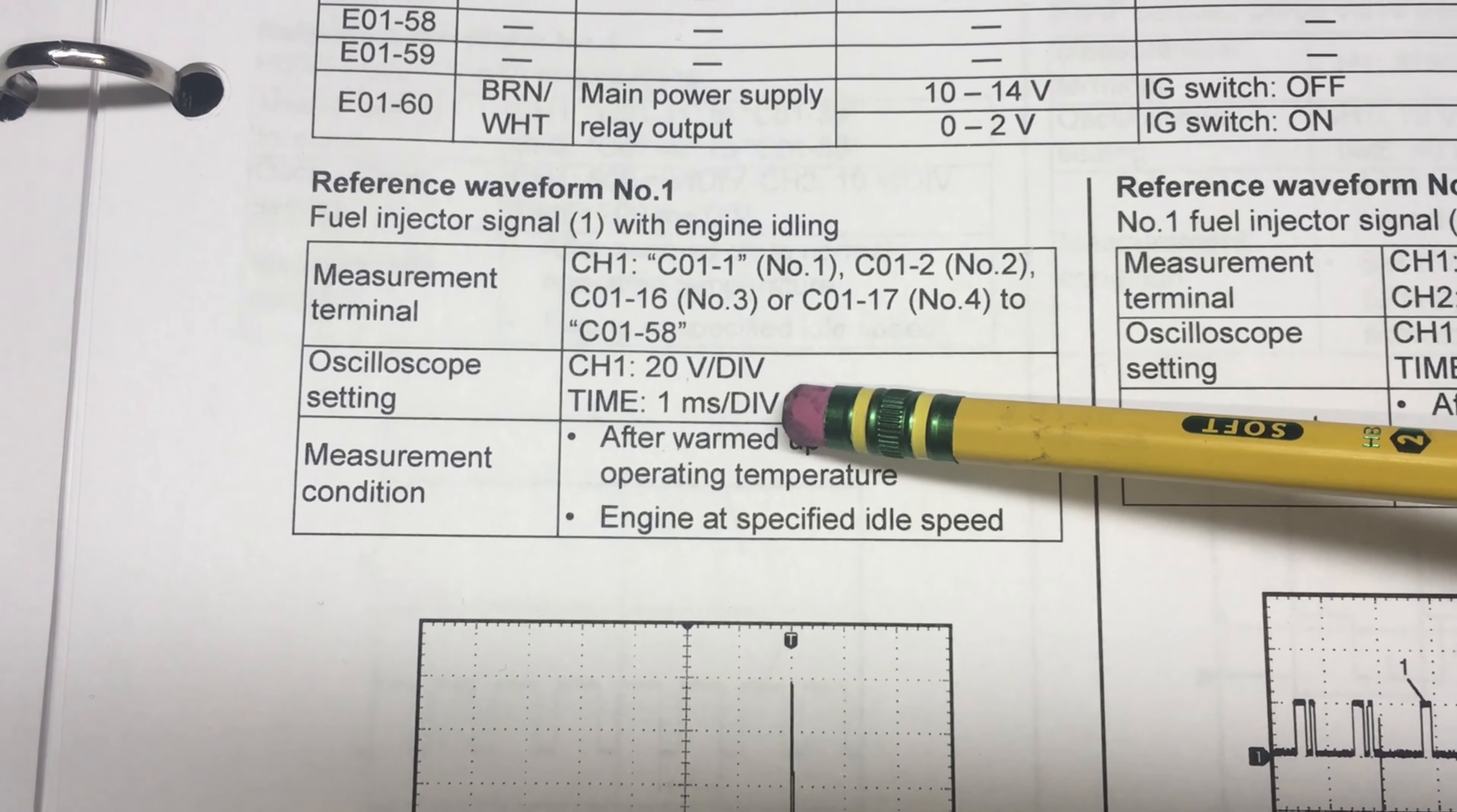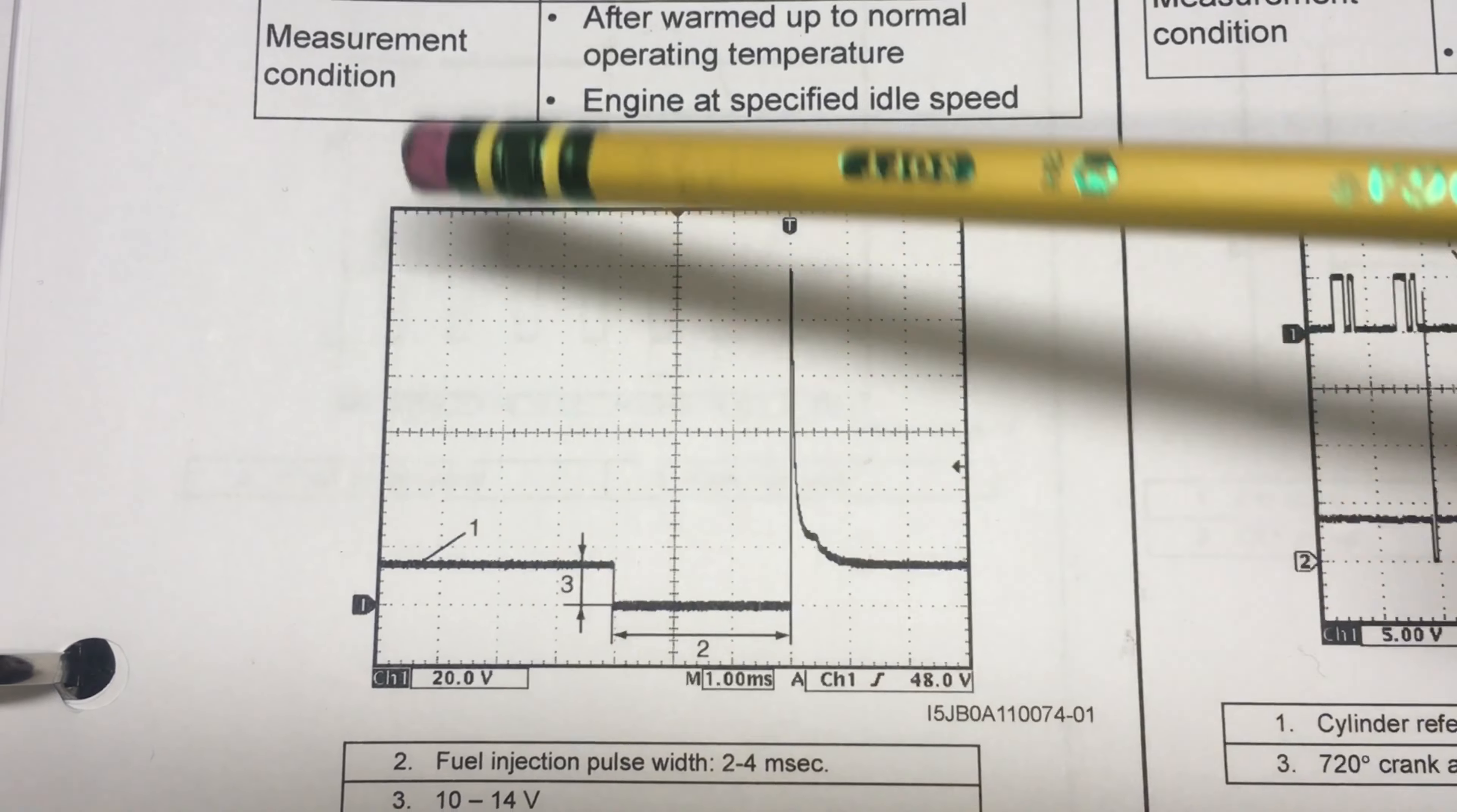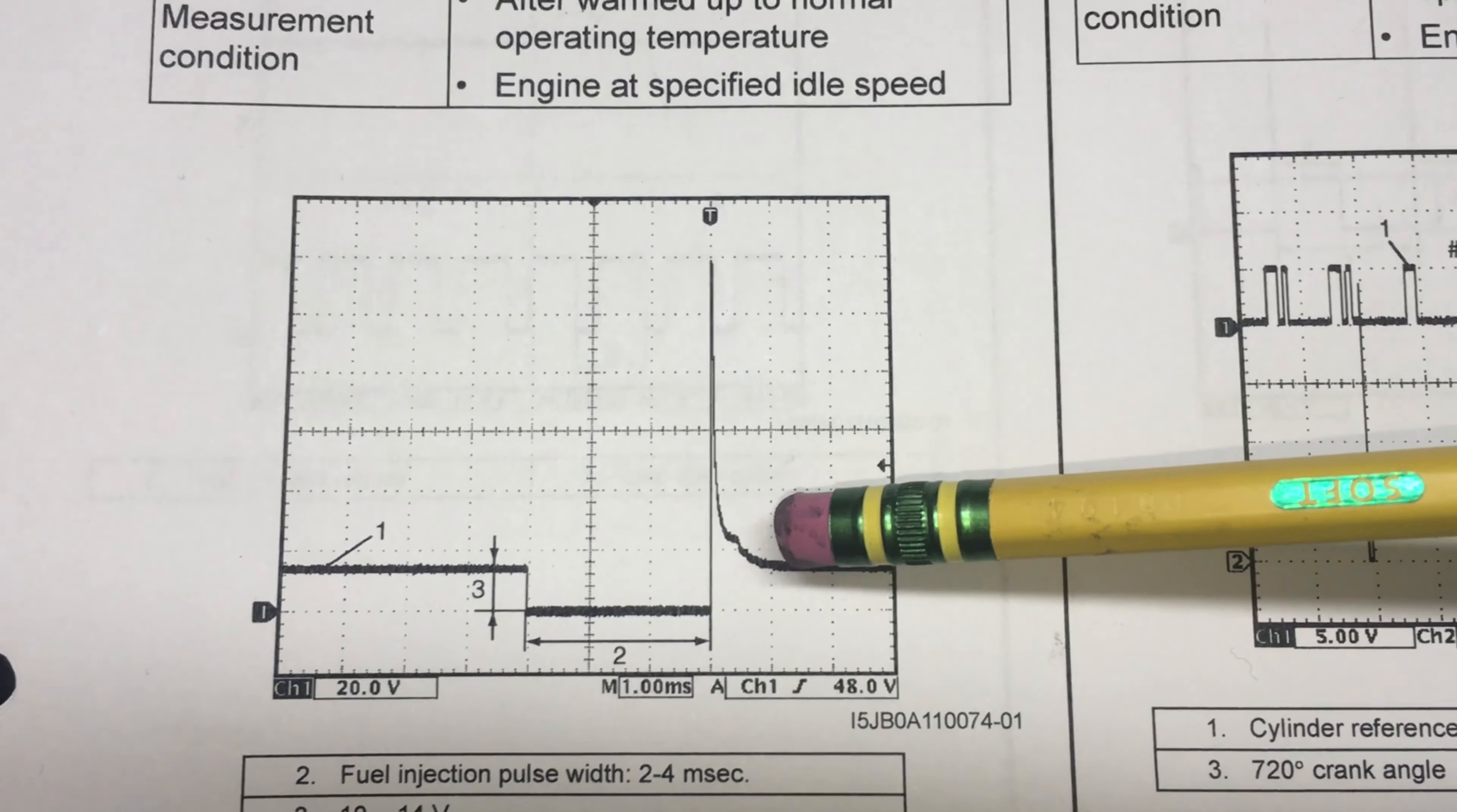Why such a high setting on the Y-axis, the voltage scaling? Because of the inductive spike that you'll get from an injector waveform. I think I mentioned that before. You can actually see here, this is 20 volts per division.